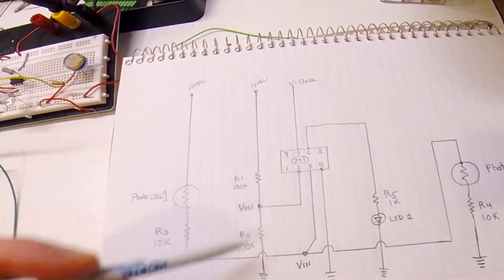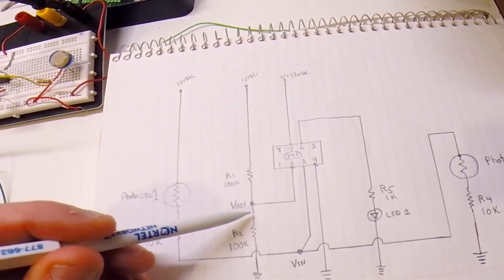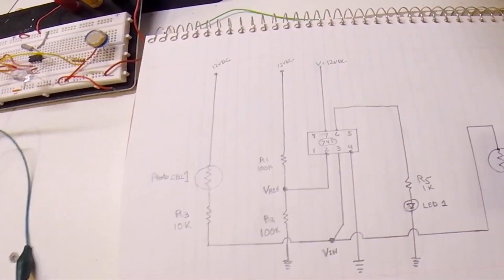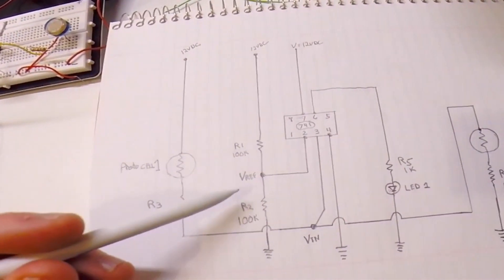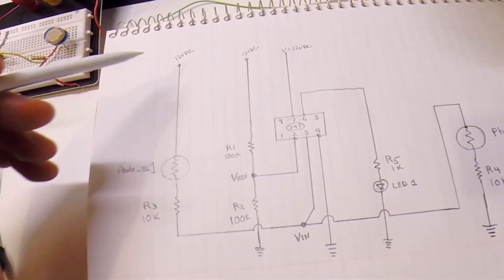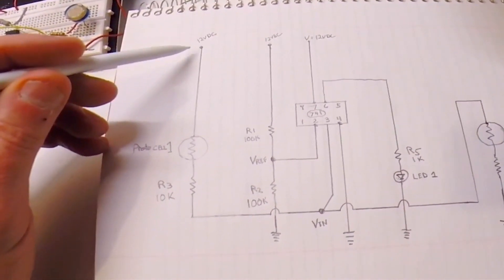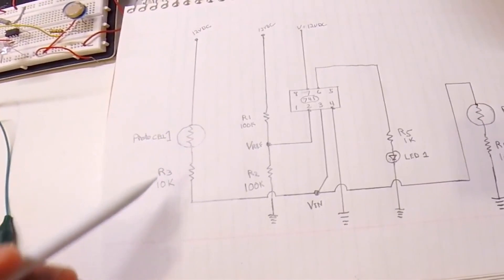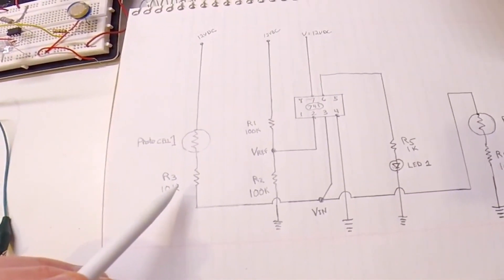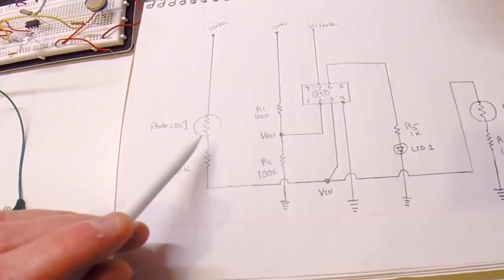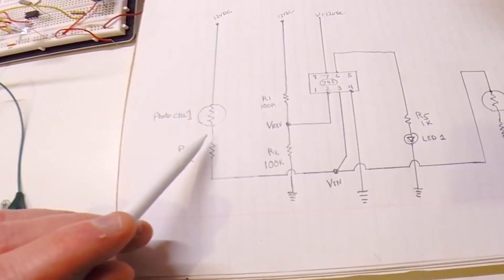Then basically what you have is two voltage dividers. Here's one of them where I get my V reference, so theoretically this should be six volts. And then I've got another voltage divider that consists of the photo cell and a 10k. The 10k is there to protect it in case the photo cell goes down to nothing and short circuits.